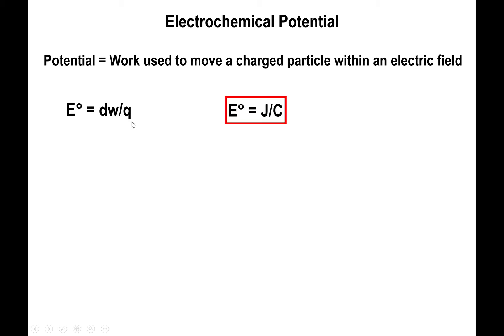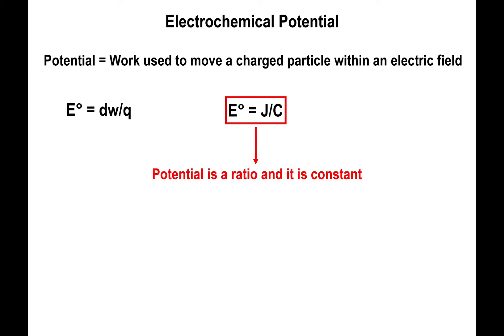The value of the potential is work per charge, and the units are joules per coulomb — joules for energy and coulombs for the charge present. Joules per coulomb we call the volt. Because it's a ratio of energy per charge, this is going to be a constant no matter how big or small a sample you have, because the charge changes proportionally with amount. So the potential in volts is technically a constant, and that will have consequences when we combine equations.